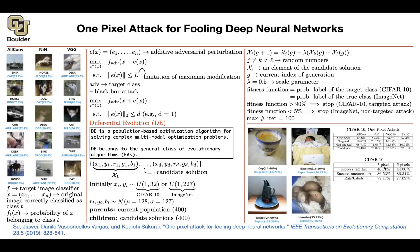Increasing the number of pixels you're allowed to change leads to a more effective attack. The results show success rates for targeted and non-targeted attacks: for example, starting from a dog, you can target all other nine CIFAR-10 classes and successfully fool the network by changing only one pixel — classifying a dog as an airplane, cat, or horse, etc.